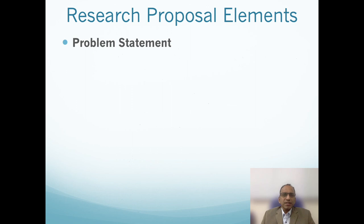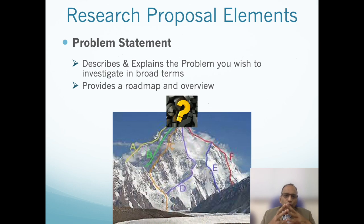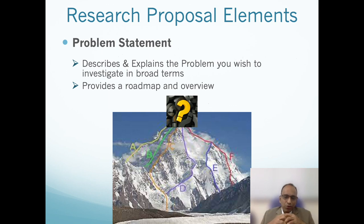Before we go on to research questions, hypothesis, etc., we have to start with what the problem statement is. A problem statement describes and explains the problem that you wish to investigate in the broadest term possible. It usually provides a roadmap and an overview of what you want to achieve in this research project. You can identify the problems relatively easily, but there are so many ways to climb that mountain — so many paths — and what you have to do in this problem statement is establish that there is a problem in the broadest term, and that there are multiple pathways to achieve a solution.